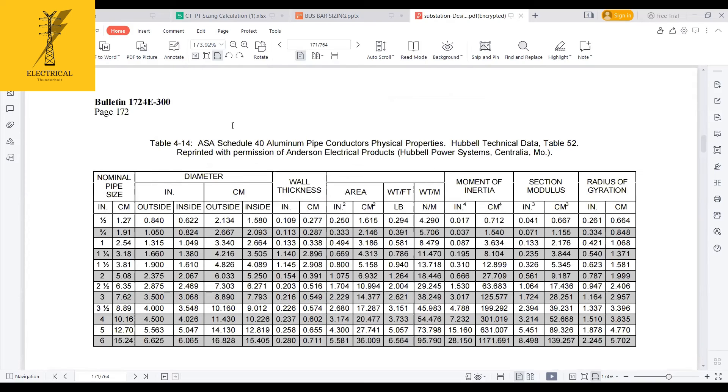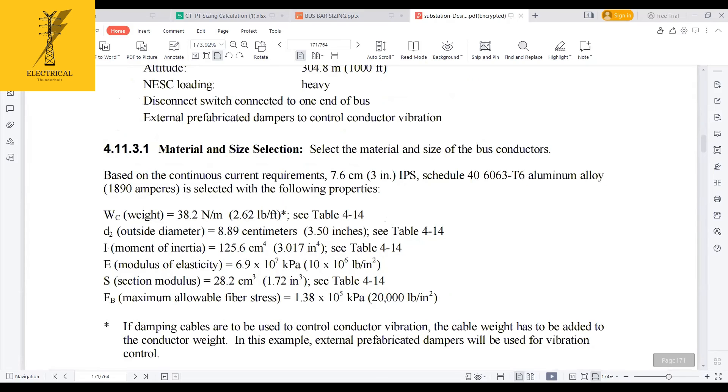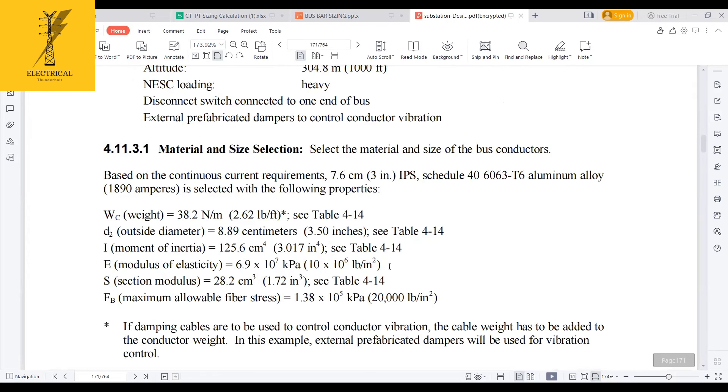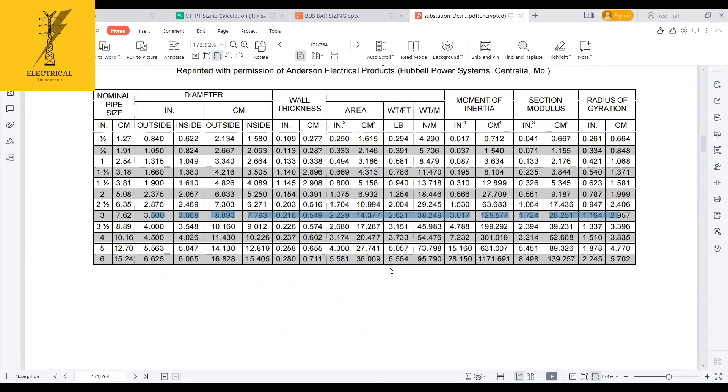This is the table of the schedule 45 table. So here you can see the four-inch. I am selecting what inch? Three-inch, right? So the three-inch cable is this. The hole, the moment of inertia, everything was given here. Fine. So next,